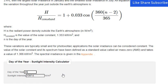The power variation due to the elliptical orbit is about 3.4%, with the largest solar irradiance in January and the smallest solar irradiance in July. An equation which describes the variation throughout the year just outside the Earth's atmosphere is provided.